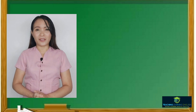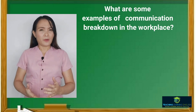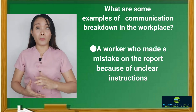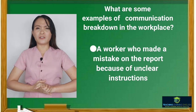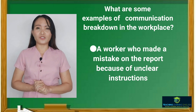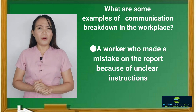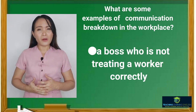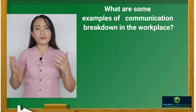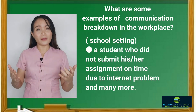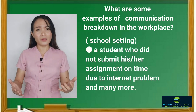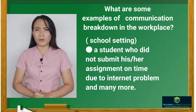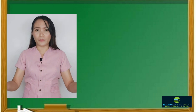What are some examples of communication breakdown in the workplace? For example, a worker who made a mistake on a report because of unclear instructions, a boss who is not treating a worker correctly, or a student who did not submit his or her assignment on time due to an internet problem, and many more.